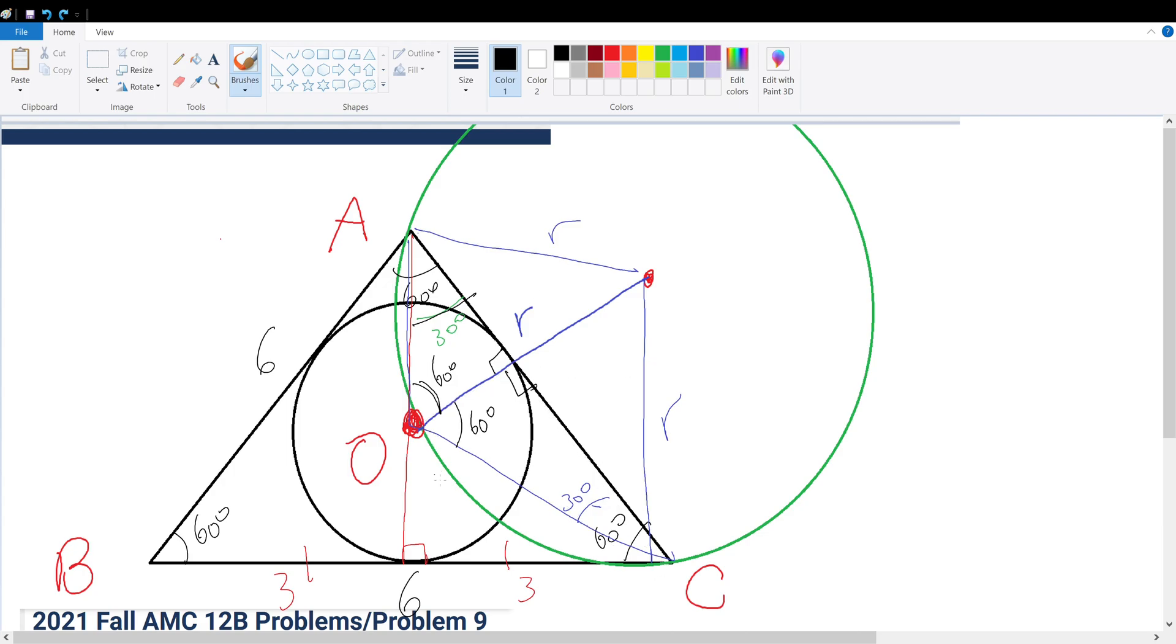We are given that this is side length 3, that's a right angle, and that's 30 degrees. Since this total is 60 degrees, that is 30 degrees right there, and that will be 60 degrees right there.